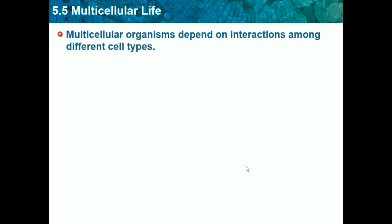Multicellular organisms depend on interactions among different cell types. As we already know, there are many different types of cells because there are many different functions to be performed. Some different types of cells could be red blood cells, white blood cells, tissues or skin cells, heart cells, and the list goes on and on.